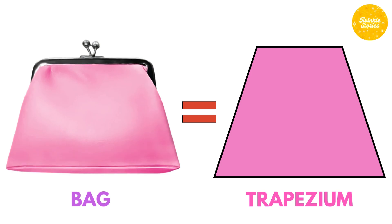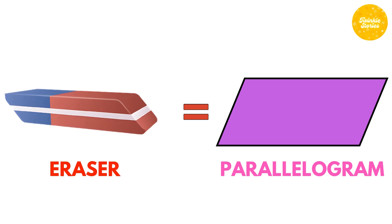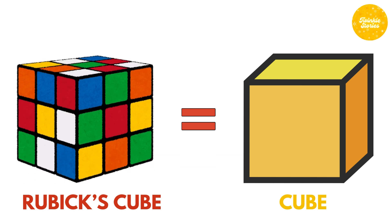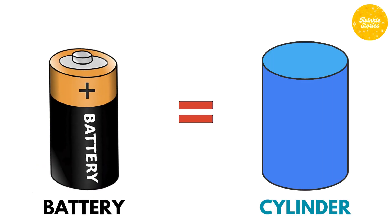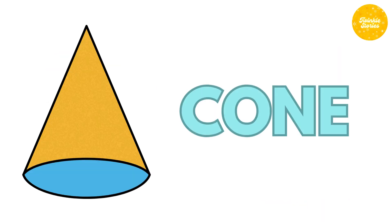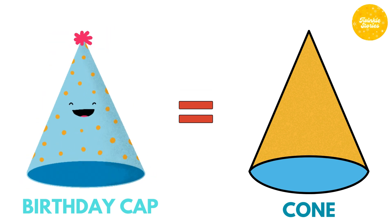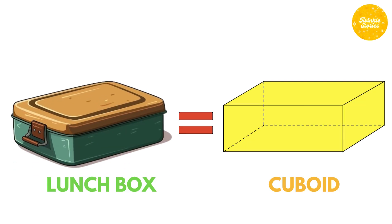Parallelogram — eraser is the example of parallelogram. Cube — Rubik's cube is the example of cube. Cylinder — battery is the example of cylinder. Cone — birthday cap is the example of cone. Cuboid — lunchbox is the example of cuboid.